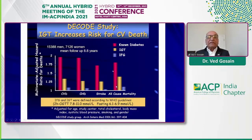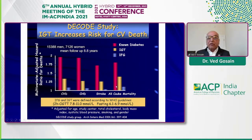This is an older study — the DECODE study. If you look at impaired fasting glucose or impaired glucose tolerance and look at cardiovascular disease complications — coronary artery disease, stroke, or all-cause mortality — you can see that with impaired fasting glucose and impaired glucose tolerance test, there is already an increased cardiovascular death.